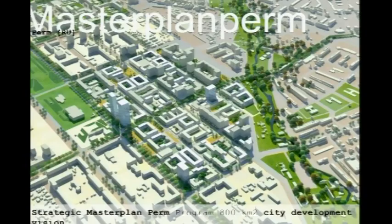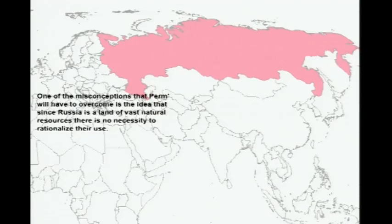Another project I'd like to show is a master plan for Perm — with a completely different aspect. This is Russia, and the problem there was that Russia is an enormous country and they have enormous space, so they don't have to take care — there is not a lack of space, so they just spread and spread. The result of this kind of development within the city was that they had an enormous problem of congestion and commuting — they couldn't handle people moving into the city because they were living so far outside.